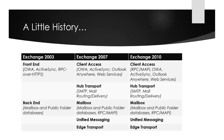The Mailbox server role was where the mailbox and public folder databases were hosted. It also accepted RPC or MAPI connections from Outlook clients on the network. There was also Unified Messaging and Edge Transport, which were new concepts with no real equivalent in Exchange 2003.